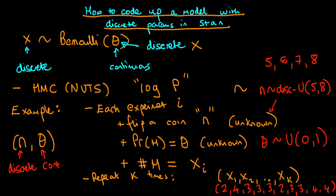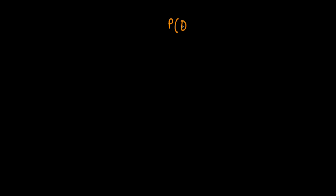So there are 10 experiments here, meaning k is equal to 10. The key to inferring the parameters n and theta in Stan is to first write down the joint distribution of n and theta given x — the joint posterior distribution. What we can then do is sum over all the possible values of n (from 5 to 8), which marginalizes out our dependence on n and gives us p(theta | x), our posterior distribution for theta.